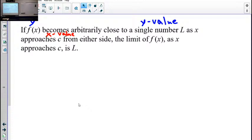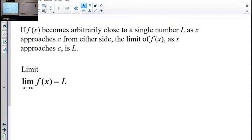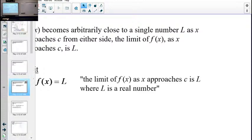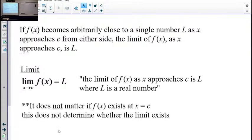Then the limit of F of X as X approaches C is L. So C in this case was 1. We were studying what was happening with X around 1, and we found that the Y values around 1 were very, very close to 3. And our notation for that is going to be the limit as X approaches C, this little arrow means approaches, a particular value of the function equals whatever Y value we're saying we're getting closer to.